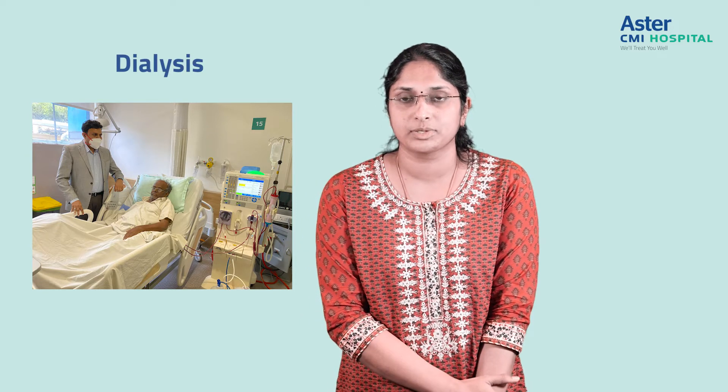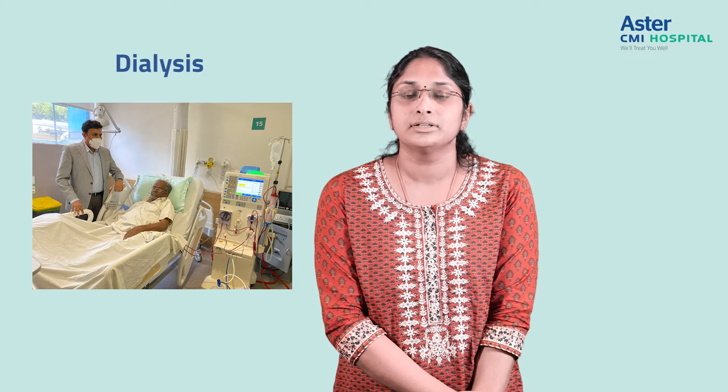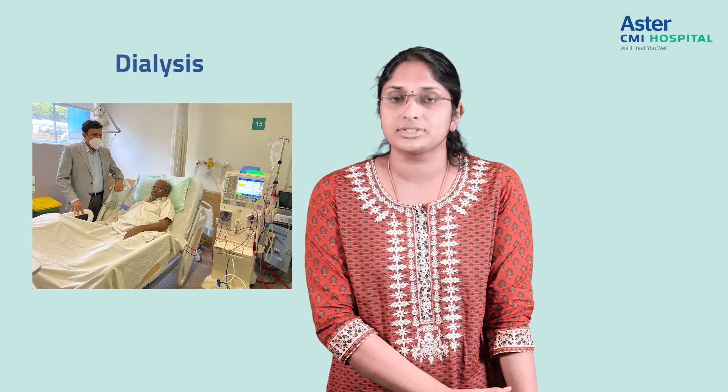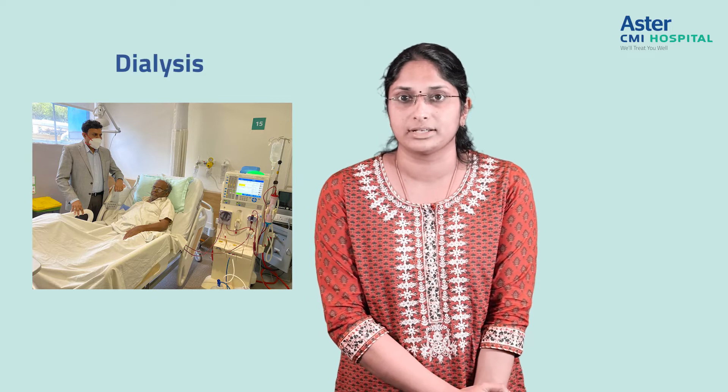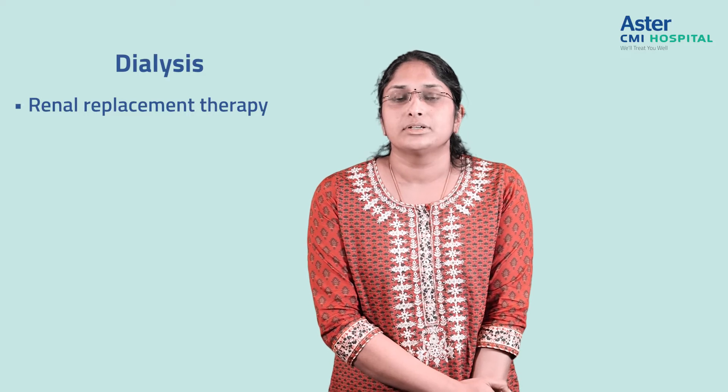A very common misconception is that once you start dialysis it's going to be a permanent phenomenon. In a good number of patients we can actually get them off dialysis. The second set of patients are those with chronic kidney disease, where there is a gradual decline in renal function over many months and years. We try to maintain them on medications, and once they reach stage 5, they will require some form of renal replacement therapy for survival, the most common being dialysis.